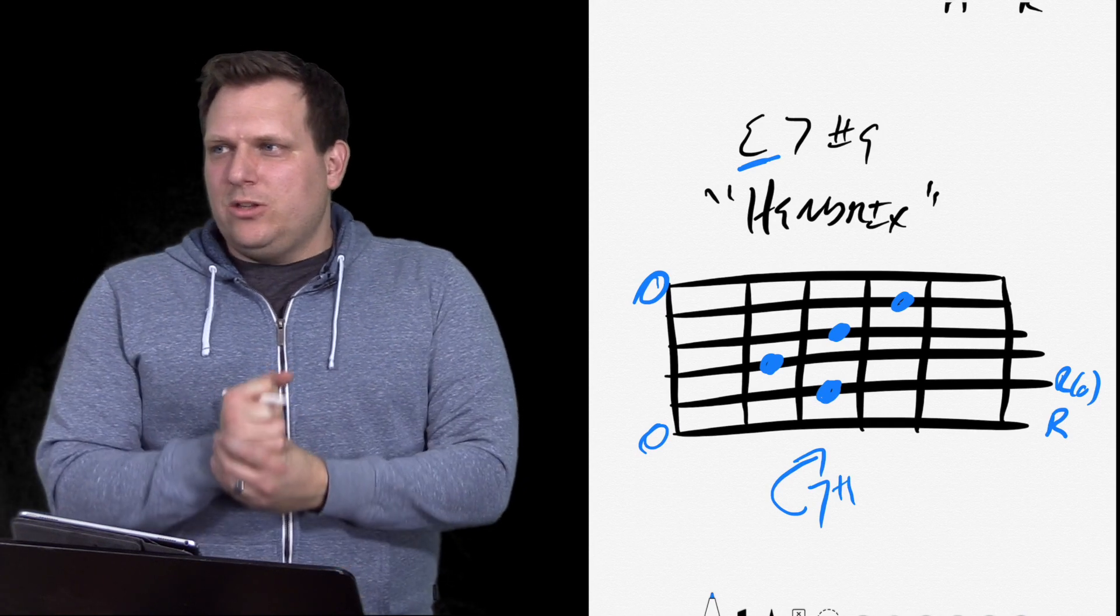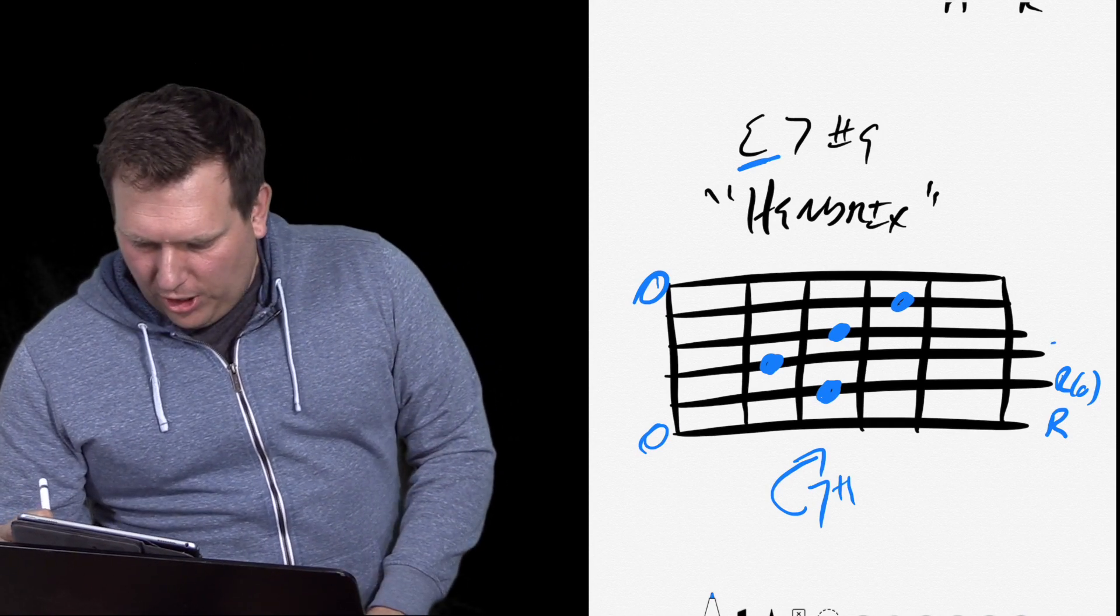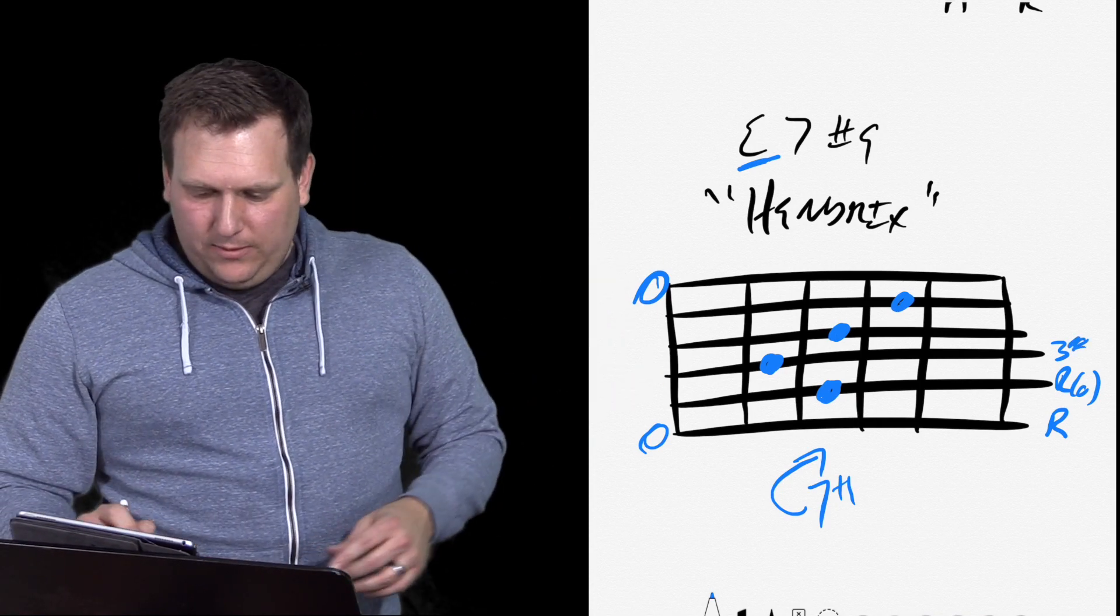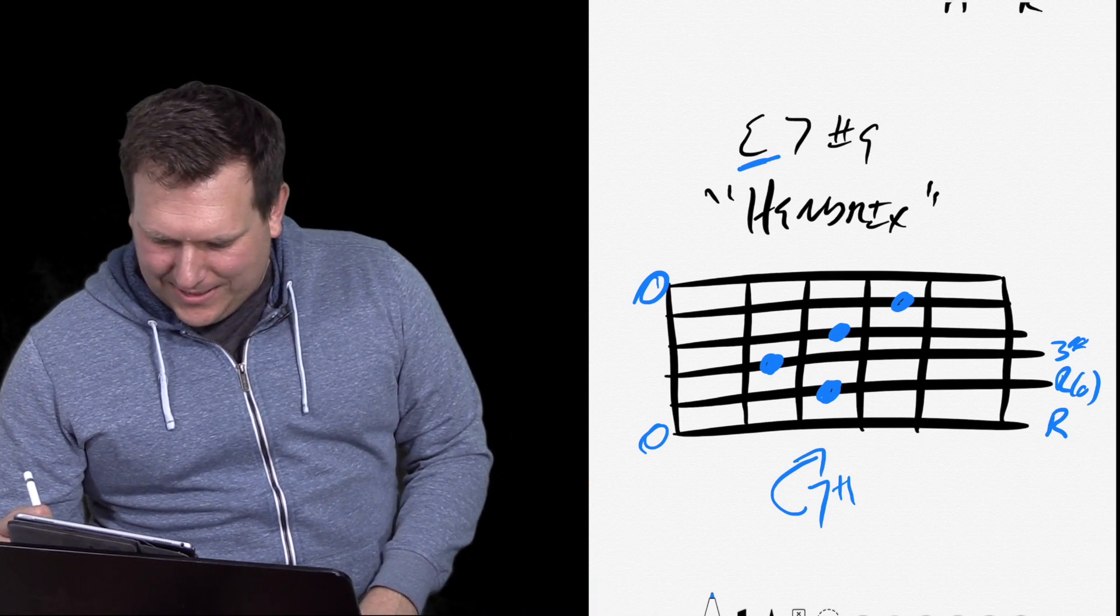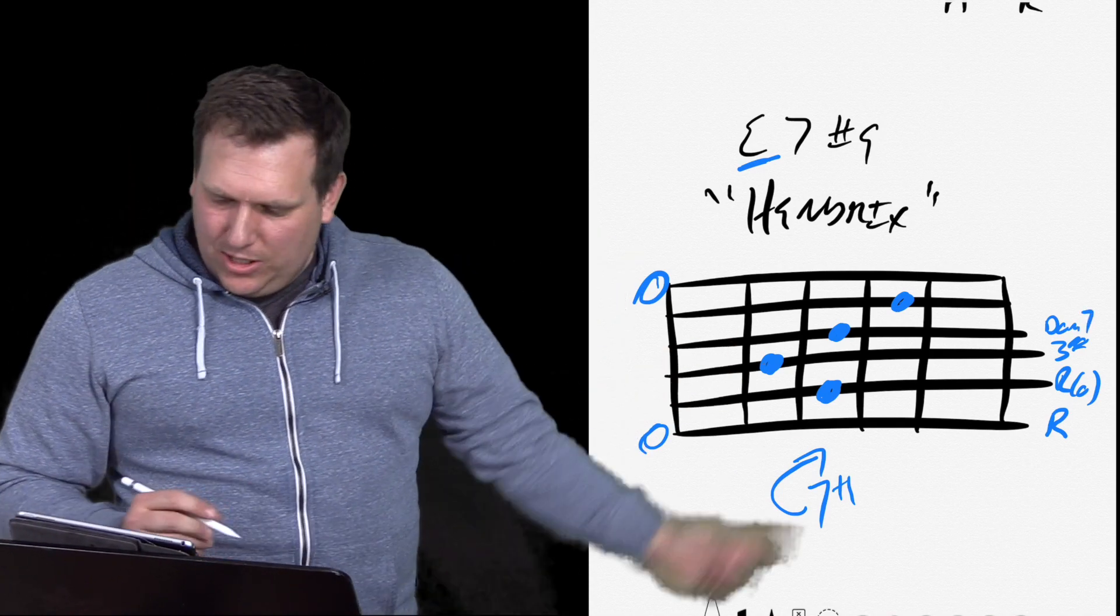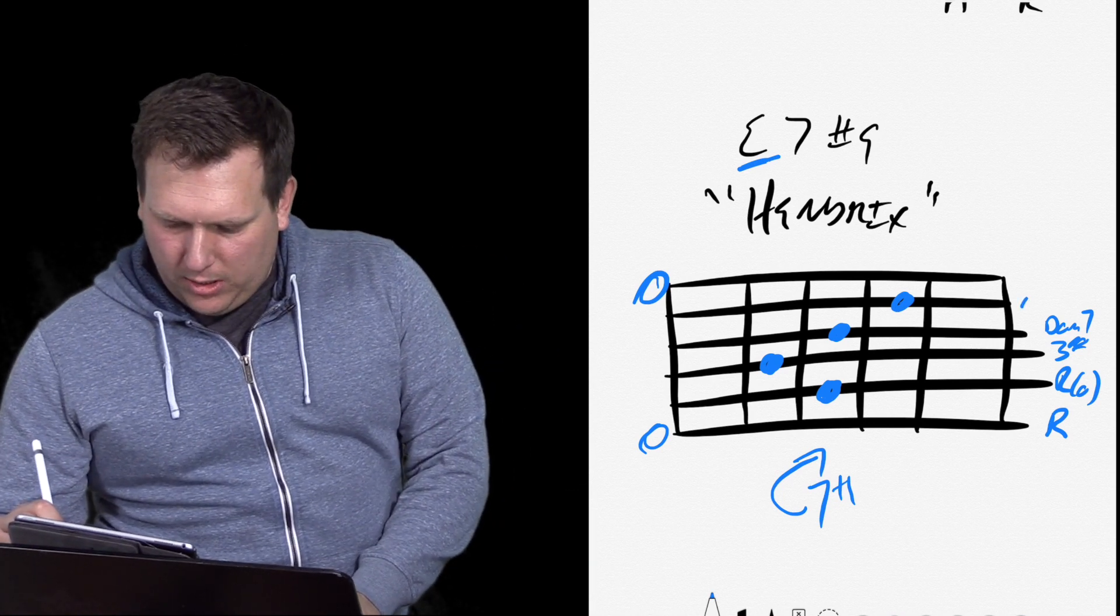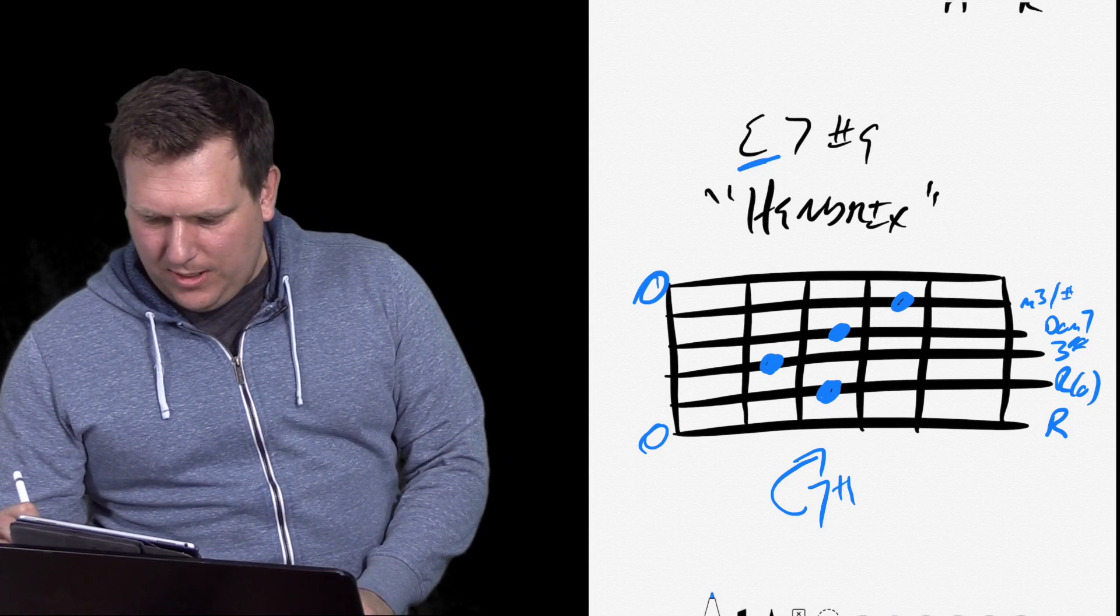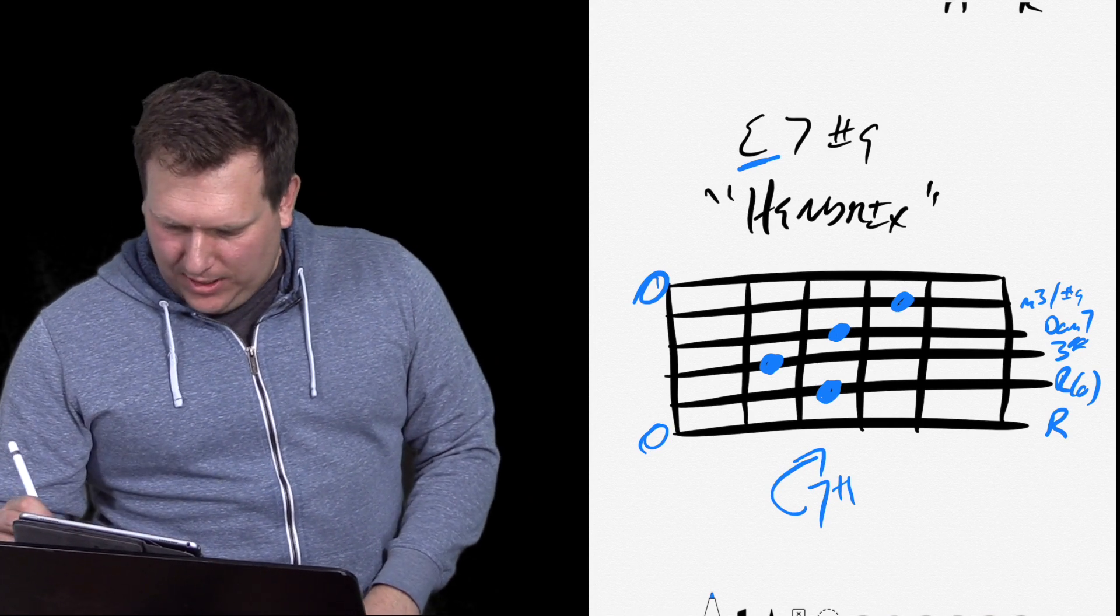On the D string, that's actually a G sharp. And that is the third of an E. Okay. On the next string on the G, he's actually playing a D, which is the dominant seven of the chord. The next note is a G, which is, this is where it gets interesting. That's the minor third or also known as the sharp nine. And then that next open E string is the root again.